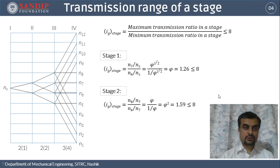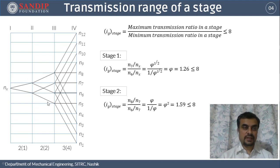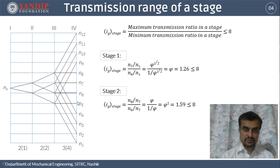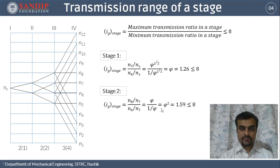For stage 2, there are two similar structures. We calculate the I-stage value for one shape, which applies to both. The input speed is N7 with two output speeds N8 and N6. The maximum transmission ratio is N8/N7 = φ and the minimum is N6/N7 = 1/φ. On simplification this gives φ², which yields 1.59 — again less than 8, so this stage is also acceptable.